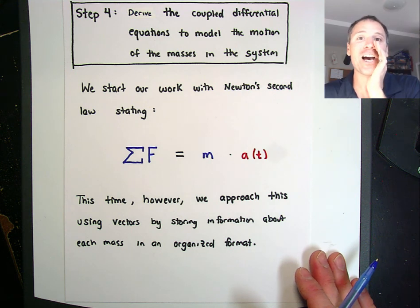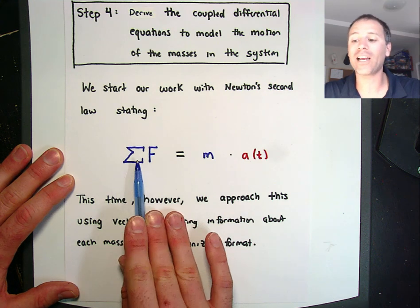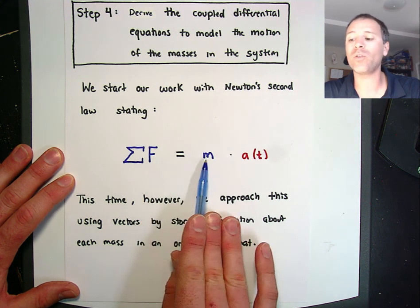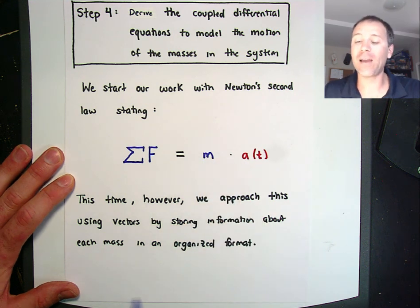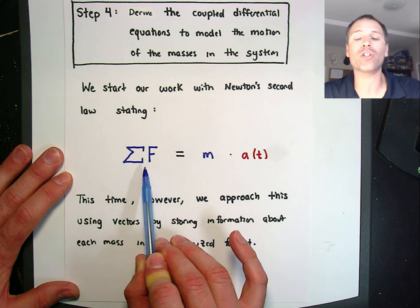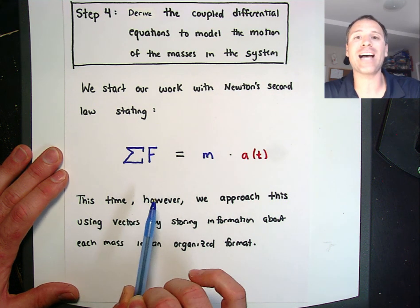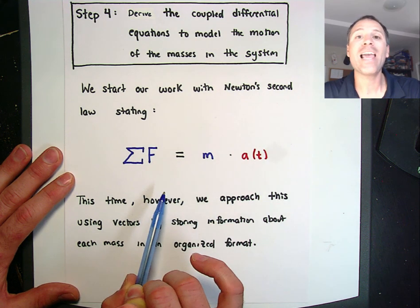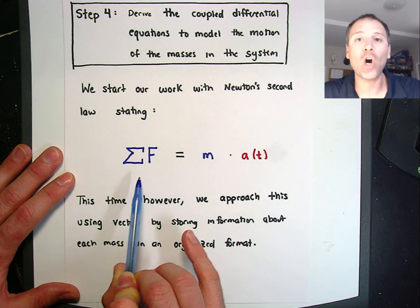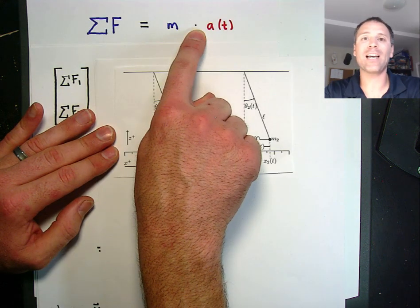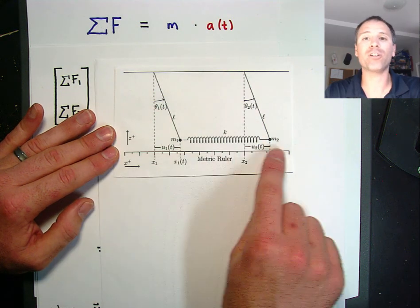Newton's second law says that the sum of forces acting on a mass is equal to the mass times the acceleration. This time we're going to state this law using vectors rather than scalars. Instead of thinking about each individual mass as a single component, we're going to look at the behavior of this law in terms of the entire system and encode the information in vector form. We'll start with the right-hand side: mass times acceleration. We have this coupled pendulum system with mass 1 on the left and mass 2 on the right, looking at behavior along the u-axis — we've linearized our system.